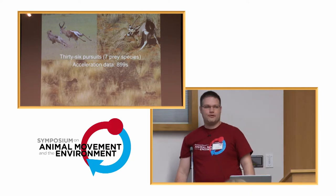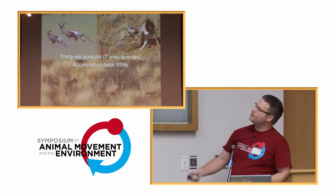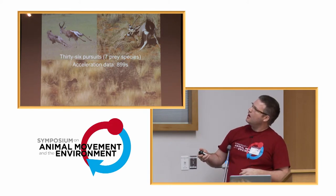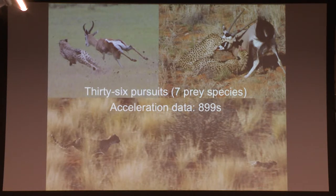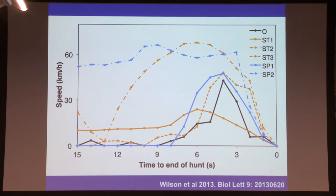The cheetahs were really cooperative during the study. We recorded 36 pursuits over the time we had nine cheetahs — each followed for two weeks. We recorded seven prey species, and the accelerometer data totaled about 899 seconds, which I thought was pretty good. Switching to the GPS data, we used Doppler to estimate speed. The cheetahs don't run as fast as we thought — they don't get to 70 or 120 kilometers per hour; the fastest speed we saw was just below 70 kilometers per hour.